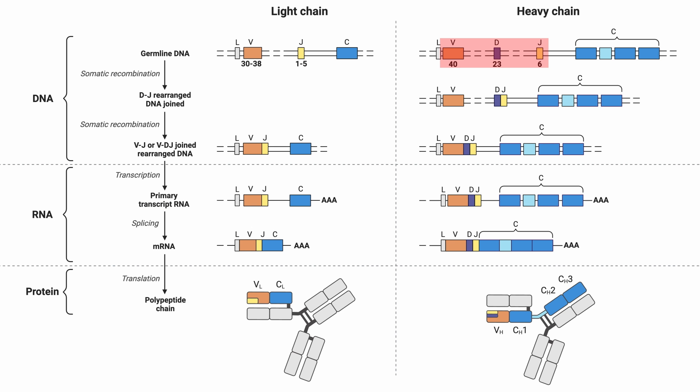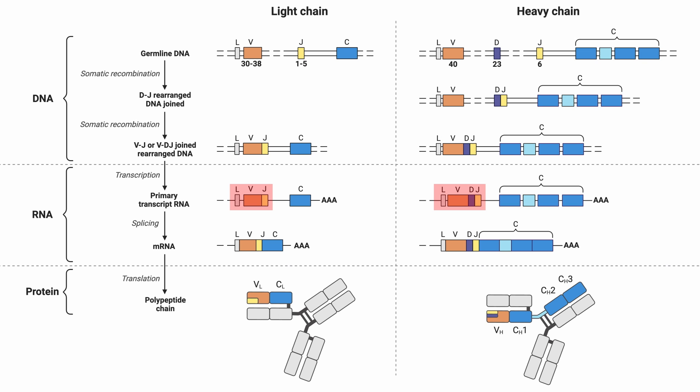These VDJ gene fragments are typically found as multiple copies that lie transcriptionally upstream of a constant region C. During the development of the lymphoid cells, segments of each type are joined by VDJ recombination so as to make a VJ or VDJ array that codes for a variable region exon, which becomes linked by RNA splicing to the C region.